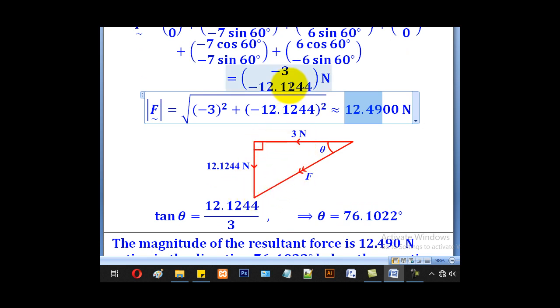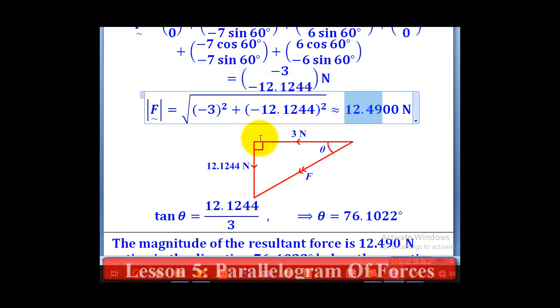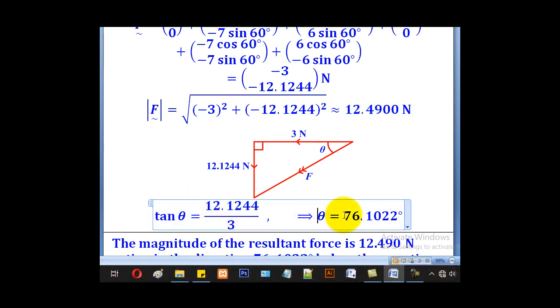For the direction, 3 was negative, so it is negative horizontal. 12 was negative, so it is negative vertical. Opposite adjacent. So tan theta will be equal to 12.1244 over 3. When you calculate that, we shall get theta as 76.1022.